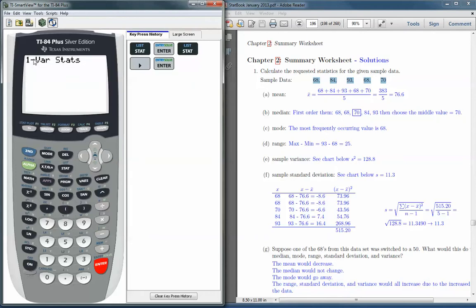And what this screen is showing us is that it's going to do one-variable descriptive statistics, but it needs a list. So it's prompting us for a list. And the numbers we want are under list one.